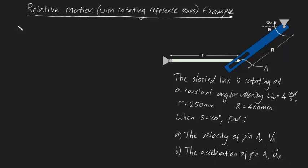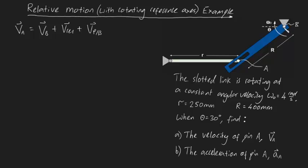Let's first remind ourselves what the velocity equation is when dealing with rotating reference frames. The equation is: the velocity of point A equals the velocity of point B, plus V_rel, plus V_P relative to B. Point B is where we keep our relative reference frame, so I'm going to define point B right here on this pin. I'll choose our relative reference frame X, Y like this — remember it rotates with the object.